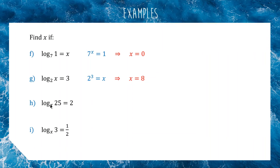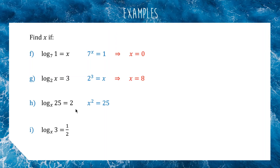For H, we're going to go: x to the power of 2 equals 25. Now we've got to be a bit careful — normally we'd say positive or negative 5, because negative 5 squared is also 25. However, logarithms only work when the base is a positive number and the subject is a positive number. We can't do log to the base of negative 5 — it doesn't make sense. So even though this equation has two solutions, only the positive one is valid for a logarithm. So x equals 5.